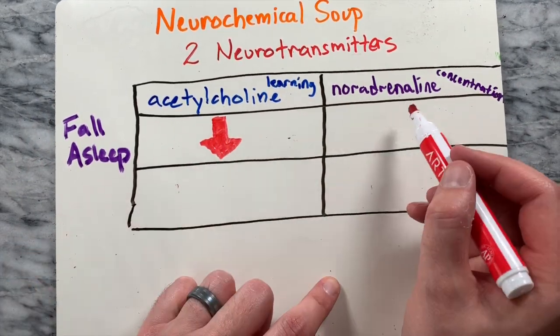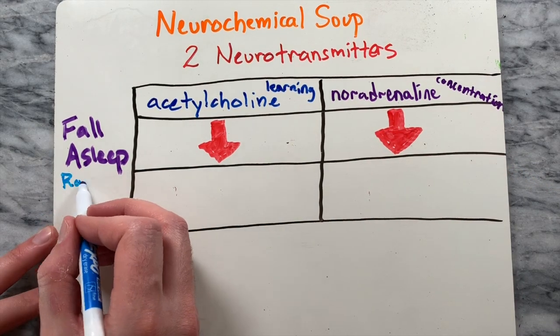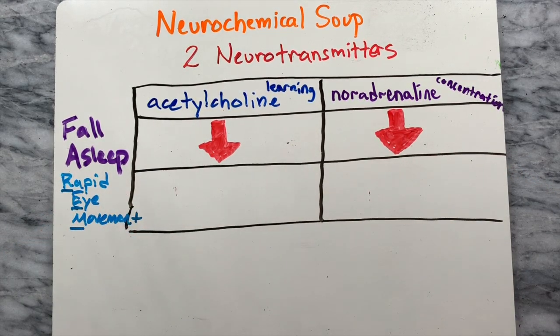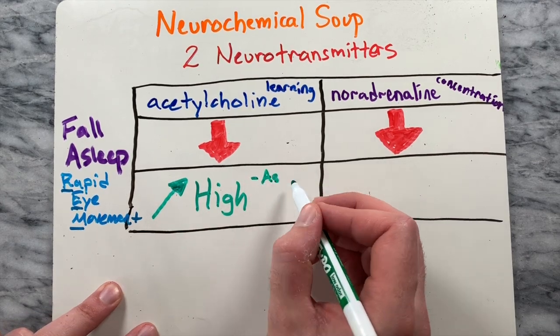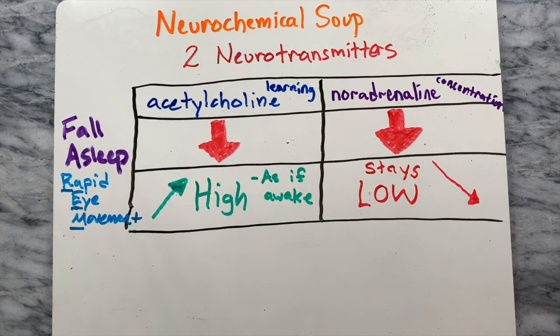When we fall asleep, these chemicals drop dramatically. Then, in rapid eye movement stage of sleep, where vivid dreams occur, acetylcholine returns to wakefulness levels but noradrenaline stays low.